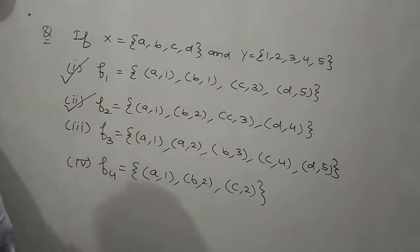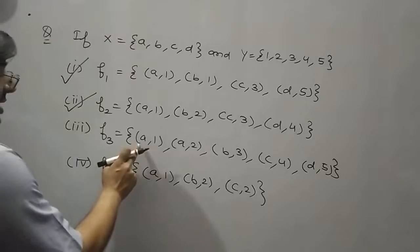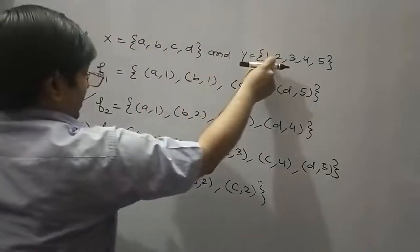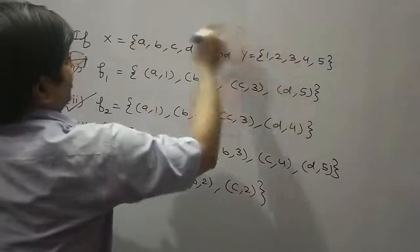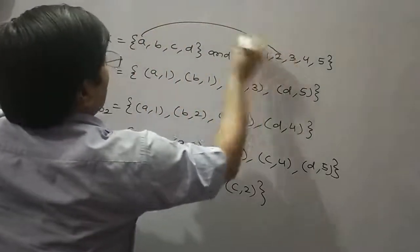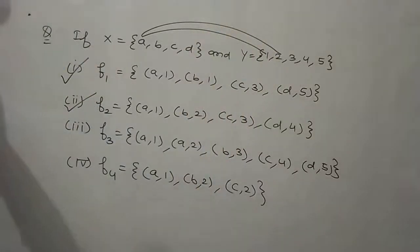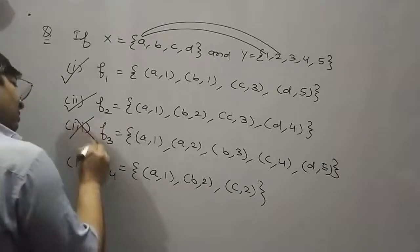Now come to the third type. In F3, A is linked to 1 and A is also linked to 2. So a single element A is linked to two elements of Y. That is why F3 is not a function.